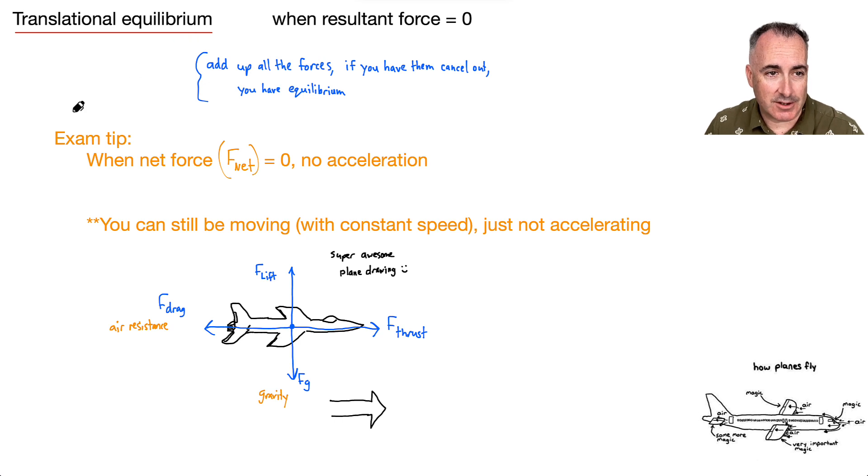Now, that doesn't mean it just falls out of the sky. This is the really key thing: you can still be moving. Because they're all canceling out, it's going to be in constant motion. It's not accelerating. That's it. Translational equilibrium really just means the resultant force is zero, but you can still be moving. That's why I put this awesome one here. How planes fly: Magic? Air? Who knows?